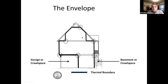The envelope, which you can see in this diagram, is basically the boundary between the heated and unheated outside world. In this case it could be a garage or a crawl space. This could be a basement or a crawl space, depending on where the thermal boundary is — which is the term we use to describe the envelope and where it is located.